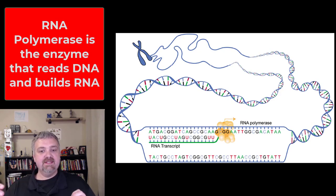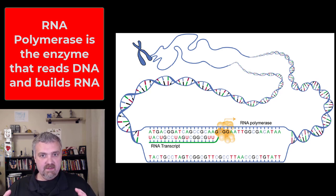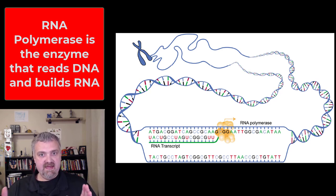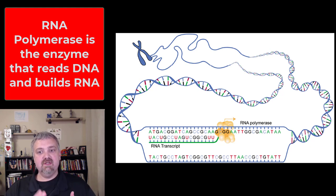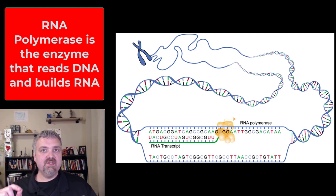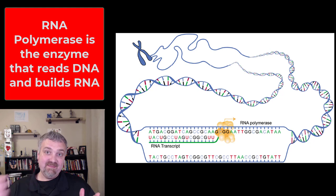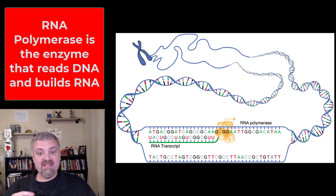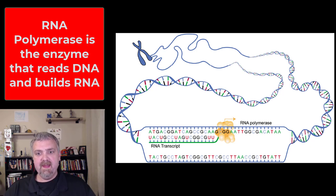So here you see it happening. Notice that the player is involved — here we have our DNA, and the DNA has to be unwound, and then a single copy of RNA is going to be made of this gene. The enzyme involved is RNA polymerase. DNA polymerase reads DNA and builds DNA, so that's used during DNA replication. RNA polymerase reads DNA and makes RNA, so it's critically important here in transcription.